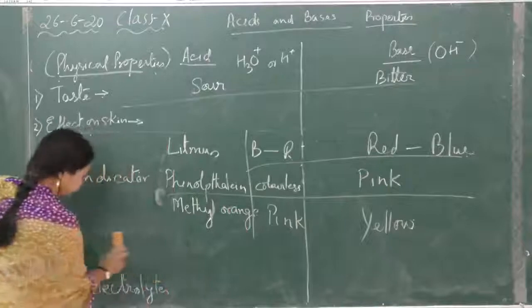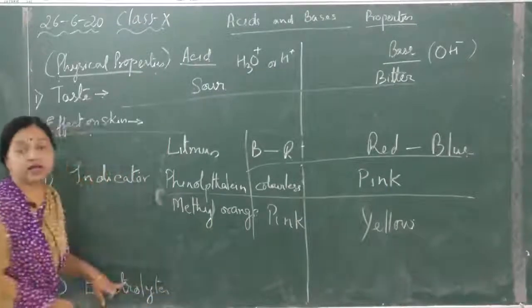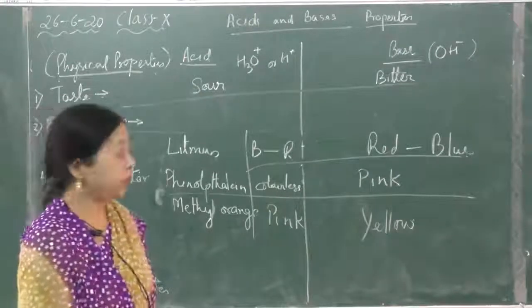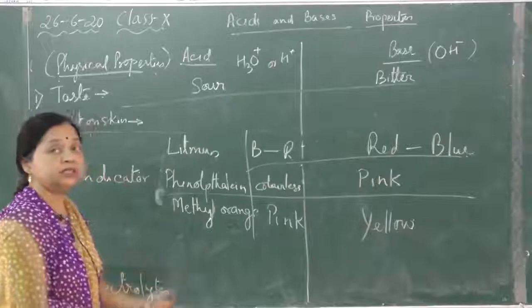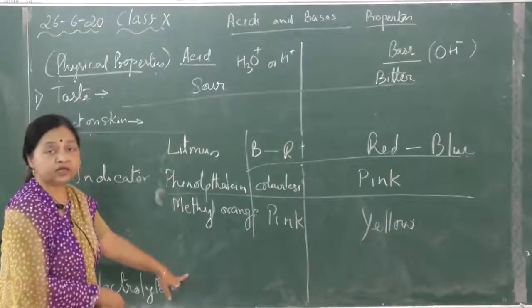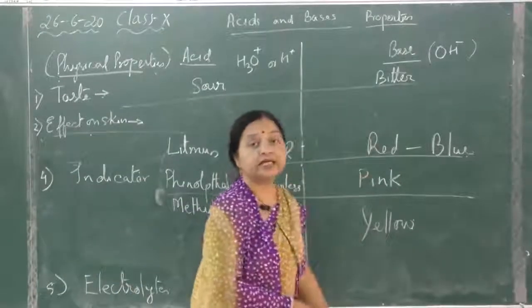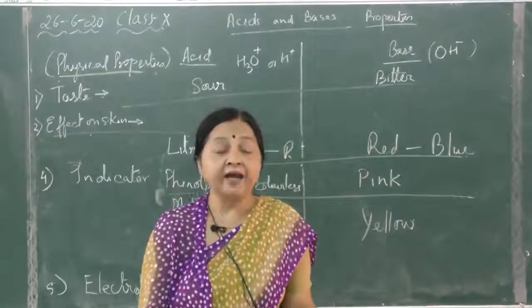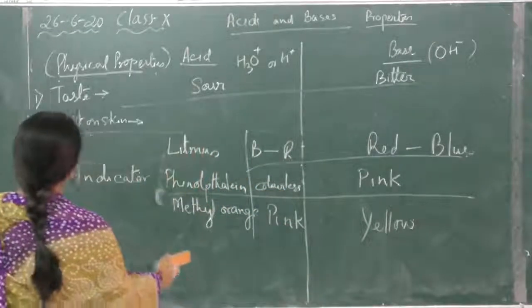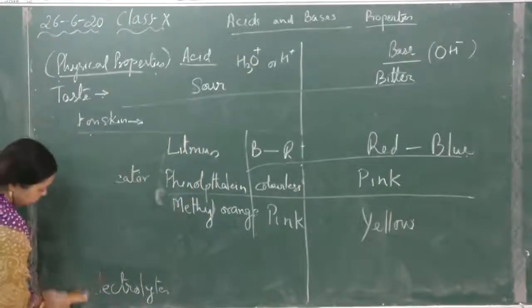Now we go to electrolytes. Electrolytes are those which conduct electricity in the liquid state, so in the aqueous state or in molten state they will conduct electricity. Acids are strong electrolytes, they conduct electricity. And here also, if it is a strong alkali, they will conduct it. They form ions and ions conduct electricity. So this is about the physical properties.